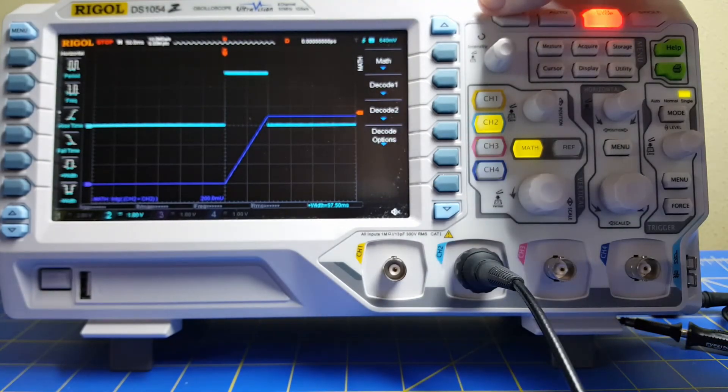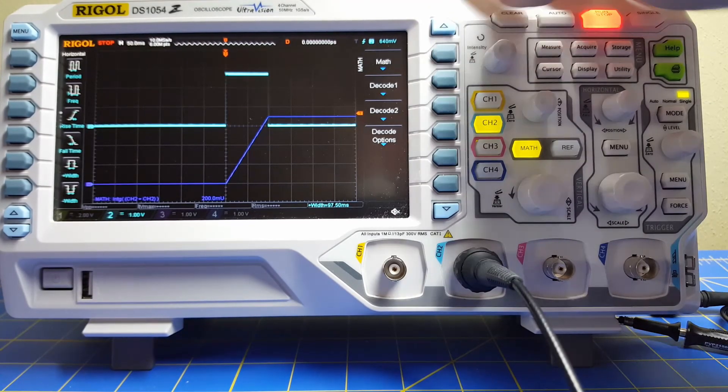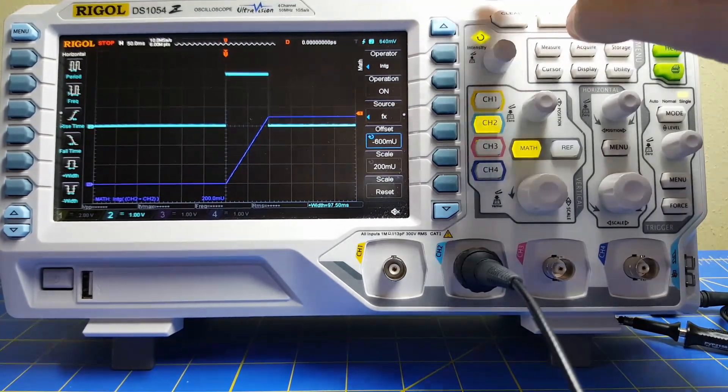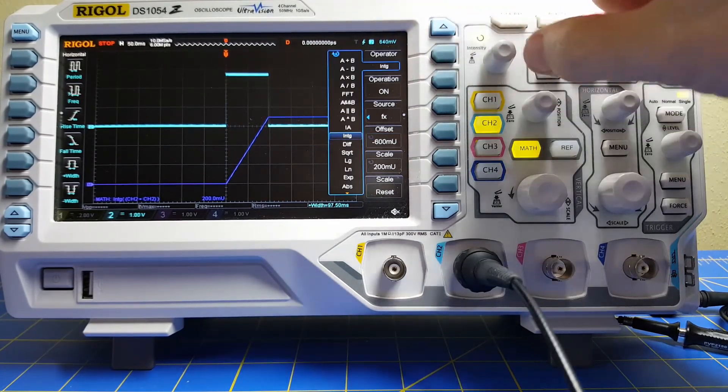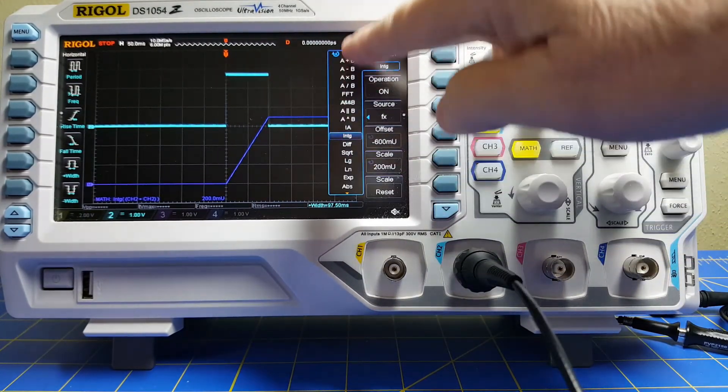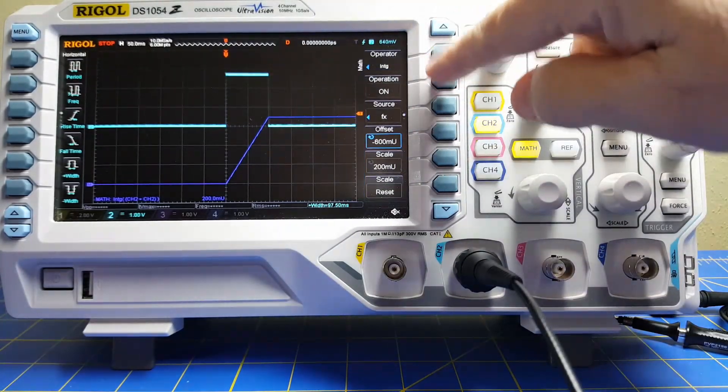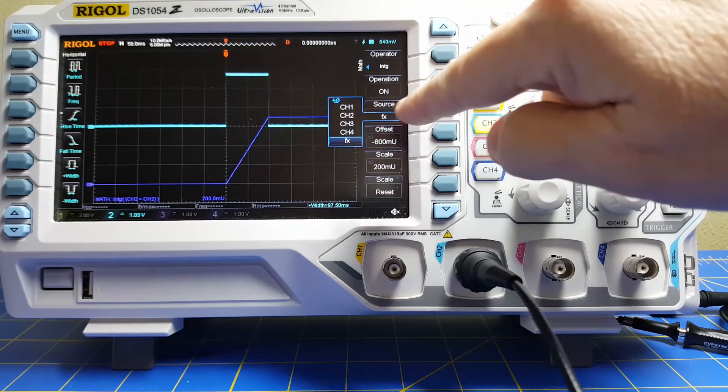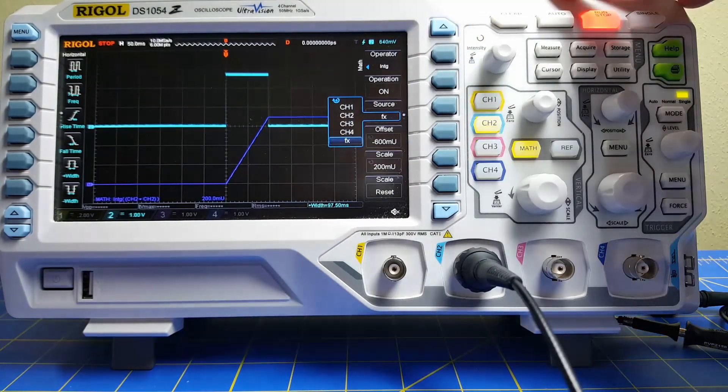With that, now we have to do the configuration of the integral. So we go back to math. And you can see I've got the operator as I've selected integral. And there's a whole bunch of choices, but I'm going to select integral and set it on. And the source has to be fx. So you go down to the source and you select fx.